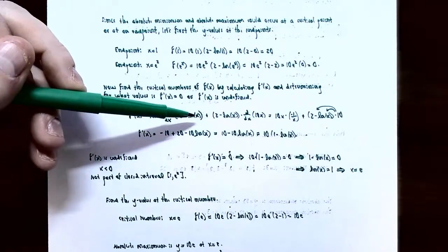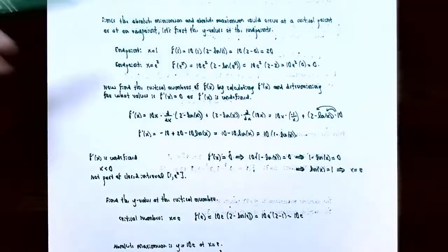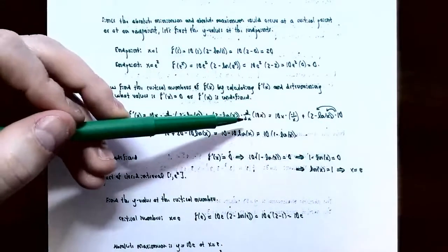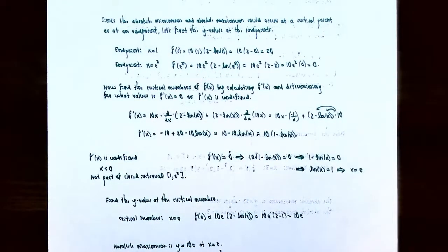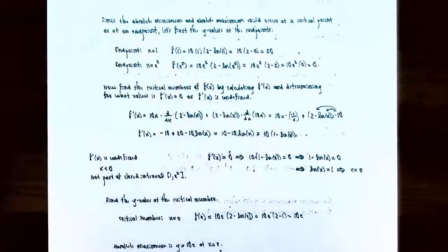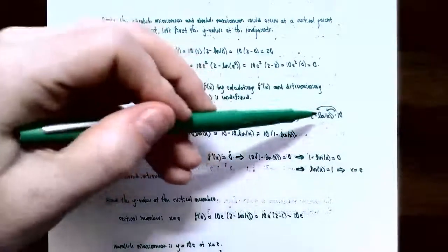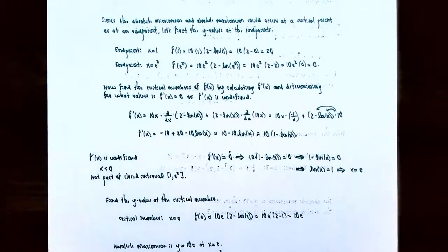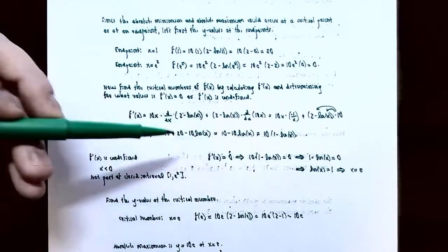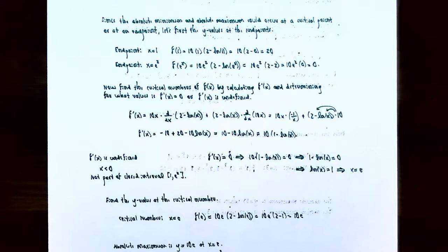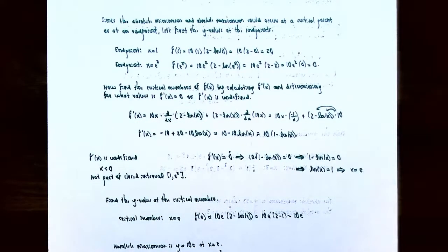So you have 10x times the derivative of (2 − ln x): the derivative of 2 is 0, and the derivative of negative ln x is −1/x. Plus the second function (2 − ln x) times the derivative of 10x, which is 10. Simplifying: 10x · (−1/x) gives −10 (the x's cancel), and distributing 10 through (2 − ln x) gives 20 − 10 ln x. Combining like terms: −10 + 20 = 10, so f'(x) = 10(1 − ln x).